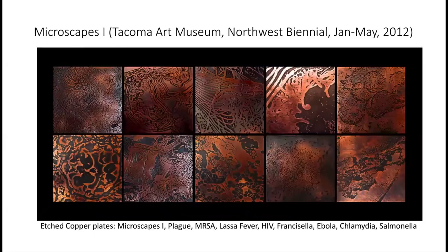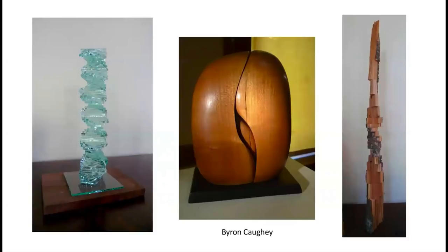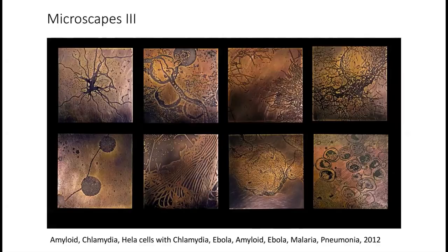Around this time I was also learning how to etch metals — my neighbor was a silversmith and taught me. I got the idea to etch copper plates inspired by these electron micrographs. Each plate was three by three inches, and I submitted this to the Tacoma Art Museum, shown at the Northwest Biennial in January 2012. I then participated in a joint collaborative show at the Ravalli County Museum in Hamilton — a collaboration between Rocky Mountain Lab scientists and local artists. I showed my Microscapes series of etched metals in brass and copper, and Byron also showed his sculptures.